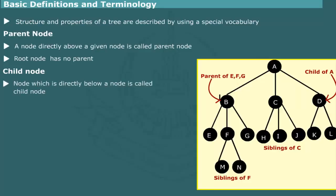A node which is directly below a parent node is called child node or simply a child. For example, C is the child of root and H, I, J are children of C.